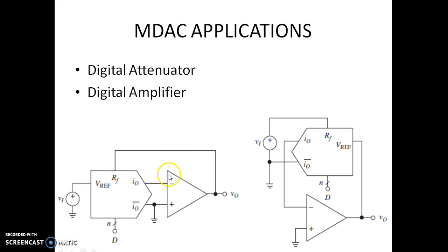This is the circuit which is going to give an output voltage which is an attenuation of the input voltage. The amount of attenuation can be controlled digitally by varying this value of D. And this is the circuit for a digital amplifier. We will discuss the working of this digital amplifier in the next video.